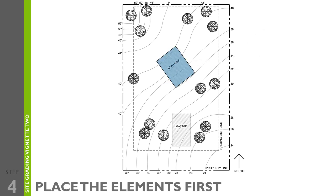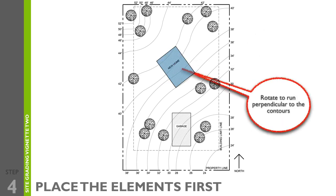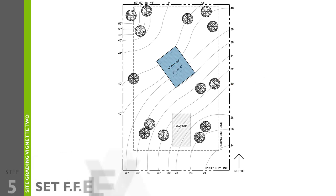After placing the home on the site, rotate it so that it is perpendicular to the contours for proper site drainage. Step number five is to set the finished floor elevation. Indicate the finished floor elevation for the new home. Be sure to stay within any minimums or maximums given in the program.